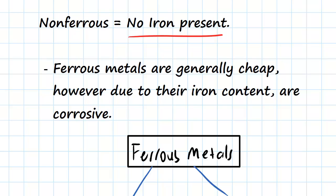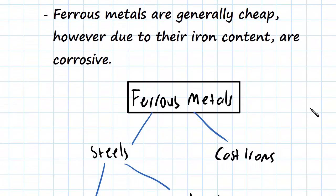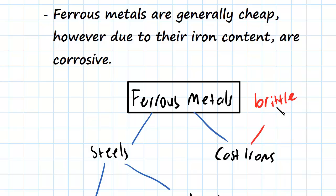Let's have a look at some further differentiation between the ferrous metals groups. Ferrous metals can be steels or cast irons. Cast irons have a higher carbon content and a lower iron content, which means they're going to be generally brittle. But since they also have a lower iron content, they're going to be more corrosion resistant.